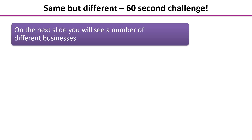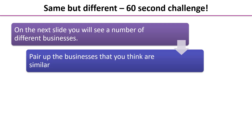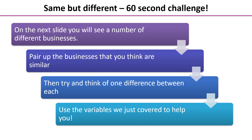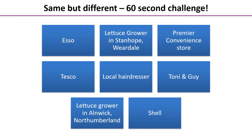Now here's a 60-second challenge. On the next slide you'll see a number of different businesses listed. Your task is to quickly pair up businesses you think are similar — there are eight businesses forming four pairs. Then think of one difference between the businesses in each pair, using the variables we've just covered. Pause the video for 60 seconds, then restart when you're ready.